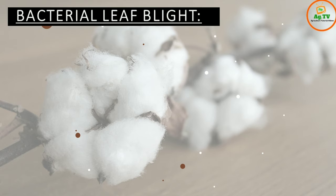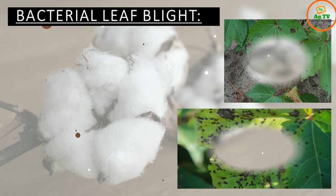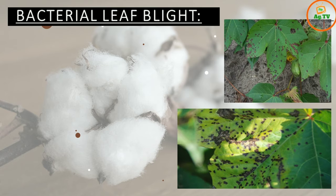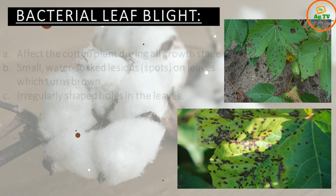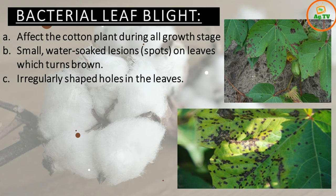First, bacterial leaf blight. You can see on the screen how bacterial leaf blight appears on cotton crop.